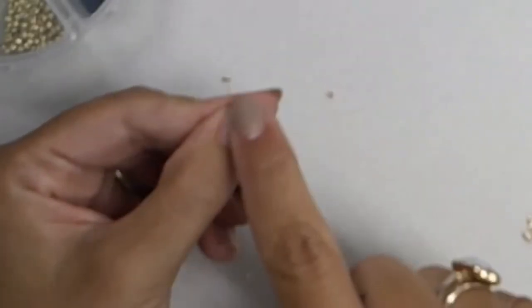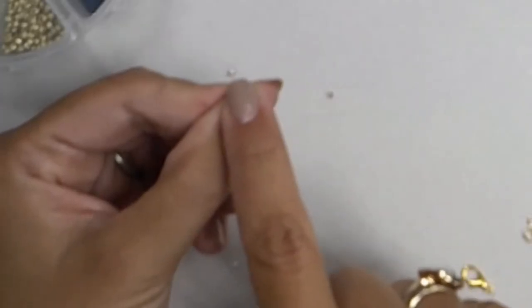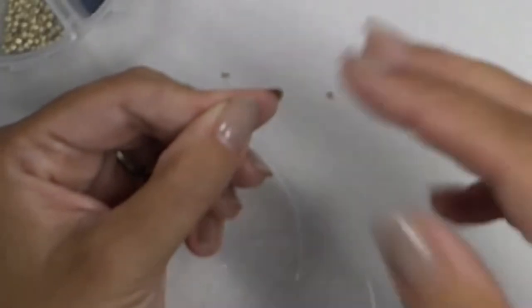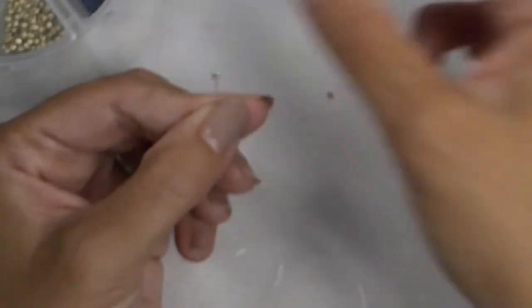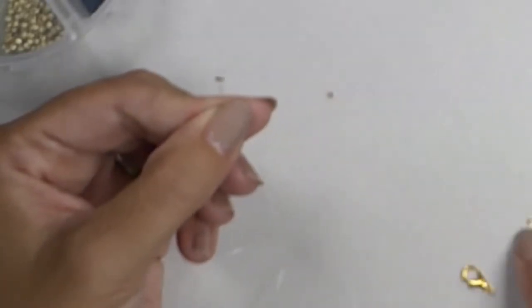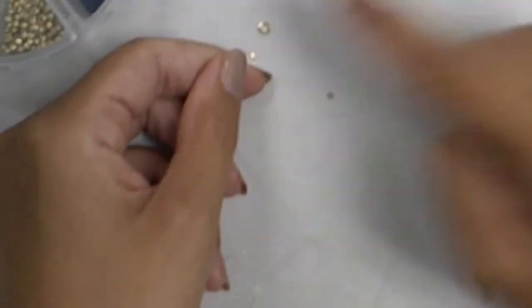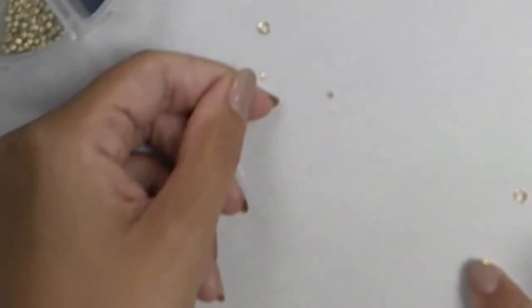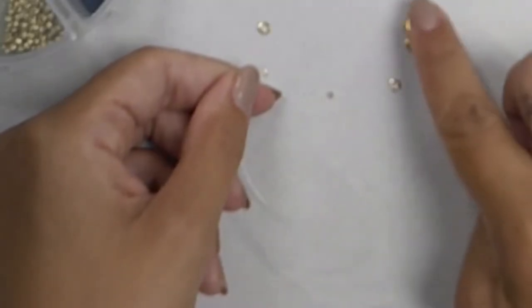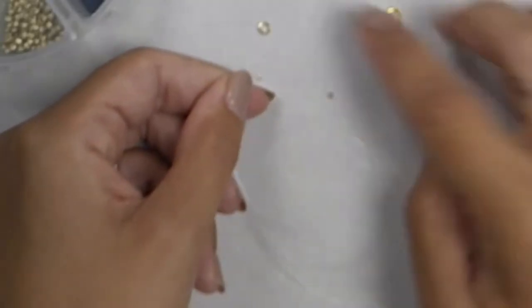Now what that does is that creates a stopping point for your beads. So when I start putting my beads on the fishing line, that will prevent them from coming off. It also allows me to have a space or a place to attach a jump ring on one end, and then on the other end, I'll do a jump ring and a clasp, and that will finish the end of the bracelet.